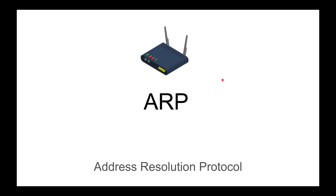ARP, or Address Resolution Protocol, is a protocol that maps an IP address to a MAC address so the host can be addressed. I wanted to make a video explaining ARP because it's starting to surface on different videos I'm making — such as man-in-the-middle, load balancing, and security — so it actually deserves its own video.